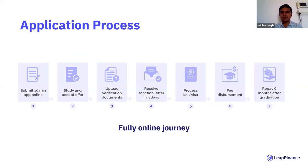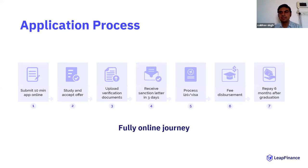Particularly in these times when we are all locked in our homes, we are still open for business — completely online. All you need to do is spend 10 minutes on our online application form, get an offer, upload your documents, and within three days you'll have a sanction. You can download your sanction letter and continue the process of getting your I-20 and visa. Once you are ready to move to the US, that is when we collect a processing fee and then directly disburse to the university on your behalf.